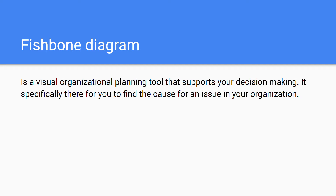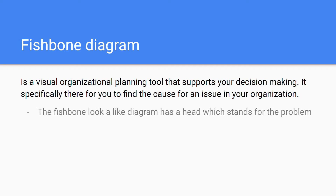The fishbone diagram is a visual organizational planning tool that supports your decision making, or the manager's decision making. It is specifically there for you to find the cause for an issue in your organization.